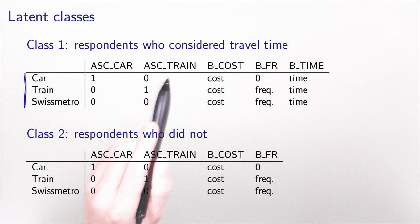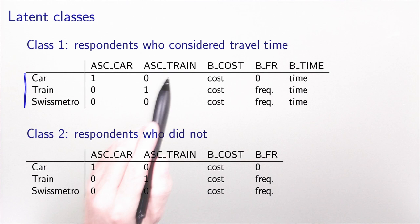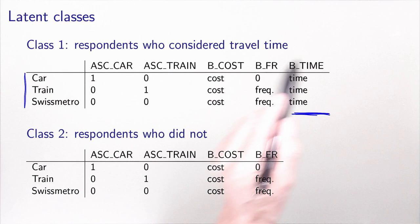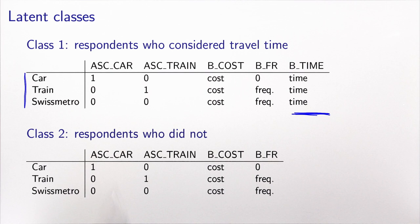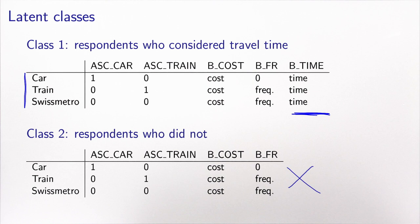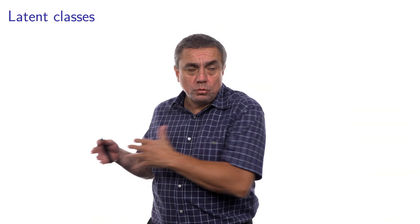Let's look at the specification of the model for each of the two classes. Class one are respondents who considered travel time: we have the three alternatives, the two constants, the cost and frequency variables, and the time coefficient, which is generic. In class two, respondents did not consider travel time, so we duplicate the same specification but omit the time variable. We assume these people took into account only cost and frequency to make the decision.